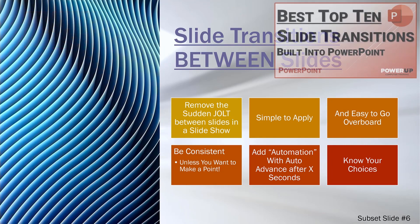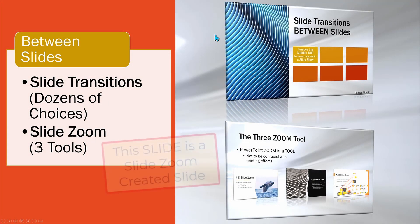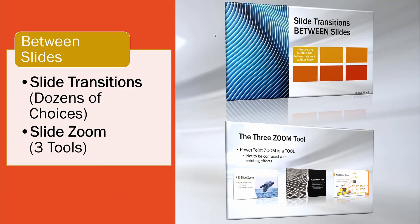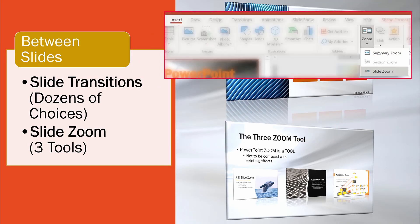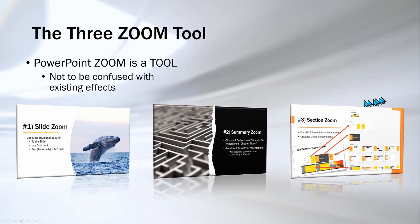A more complex tool for moving between slides is the slide zoom tool, available in Office 2019 up to the latest Office 365 desktop program. It should not be confused with the animation zoom effect or the slide transition called zoom — it is a powerful extra tool found in the Insert ribbon menu. It is actually three tools in one: the slide zoom option, the summary zoom, and the section zoom.